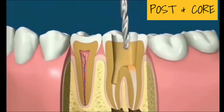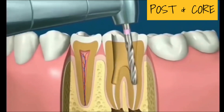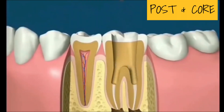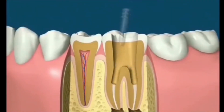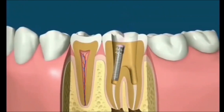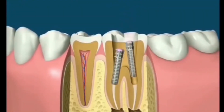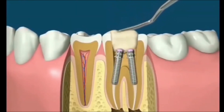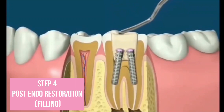Posts may be placed to strengthen the tooth and retain the filling. In this case, a light-cured resin is used to fill the space. It's soft when placed in the tooth and hardened with a bright light.